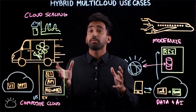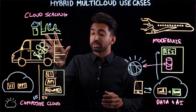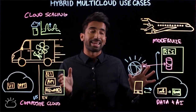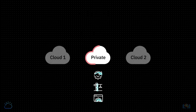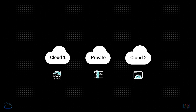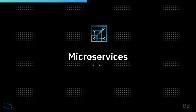Today we talked about four major use cases for hybrid and multi-cloud platforms: cloud scaling and composite cloud in the flower delivery service, as well as modernization and data and AI for the airline industry. Another reason for adopting a hybrid multi-cloud strategy is to prevent lock-in to a specific vendor's cloud platform and having the flexibility to move workloads from one cloud platform to another as the need arises. In the next video, we will understand what a microservices architecture is, its features, benefits, and use cases.